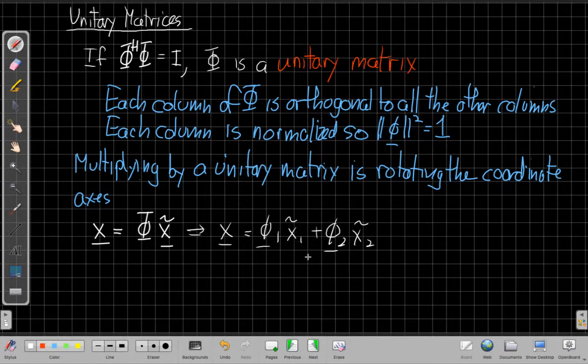I can interpret that in my 2D case, like we're thinking about with concentration ellipses. I can interpret that by saying that X is equal to the first column phi_1 times the first coordinate X tilde_1 plus the second column phi_2 times X_2 tilde. That's just begging us to draw a picture, so let's draw that picture.